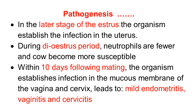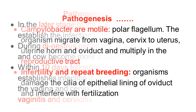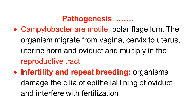Campylobacteria are motile because of the polar flagella, giving them various types of motility. So the infection spreads by both natural mating as well as artificial insemination. Because of this motility, the organism migrates from the vagina to the cervix and to the uterus, then to the uterine horn, then to the oviduct, and they multiply throughout the whole reproductive tract.